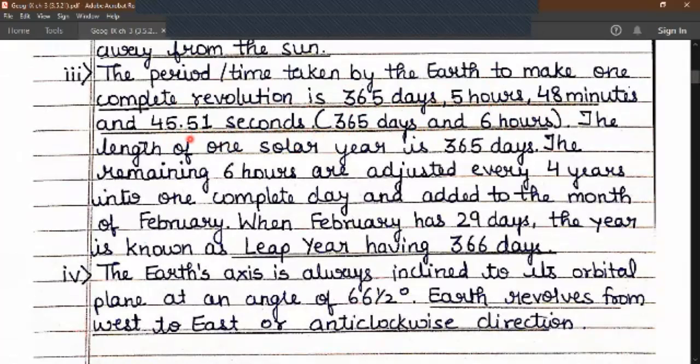The length of one solar year is 365 days. The remaining six hours are adjusted every four years into one complete day and added to the month of February. When February has 29 days the year is known as leap year having 366 days.